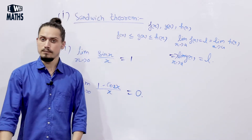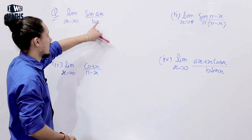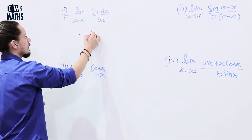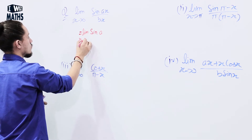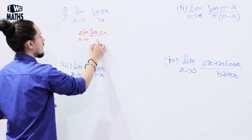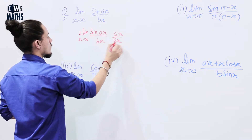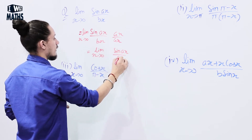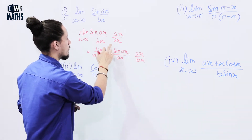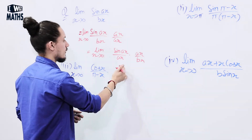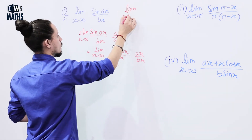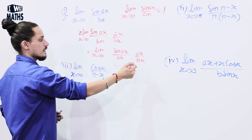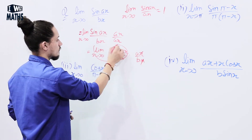Now, next example: lim (x → 0) of sin(ax) / (bx). If I multiply and divide by ax, I can write: lim (x → 0) of [sin(ax) / (ax)] × [ax / (bx)]. The term sin(ax)/(ax) becomes 1, and what remains is a/b.